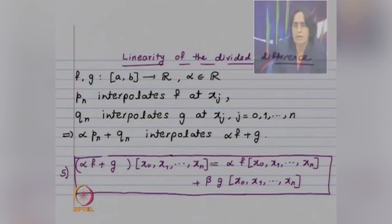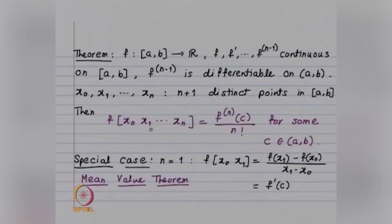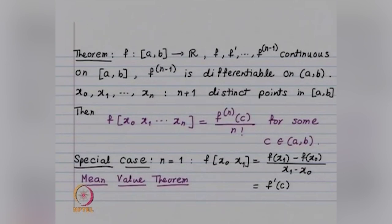The next property: suppose f is n times differentiable. Then the divided difference of f based on x₀, x₁, ..., xₙ equals the nth derivative of f evaluated at some point c, divided by n factorial, for some c in the interval [a,b]. Taking the special case n = 1, this says the divided difference based on x₀, x₁ equals f′(c), which is nothing but the mean value theorem.